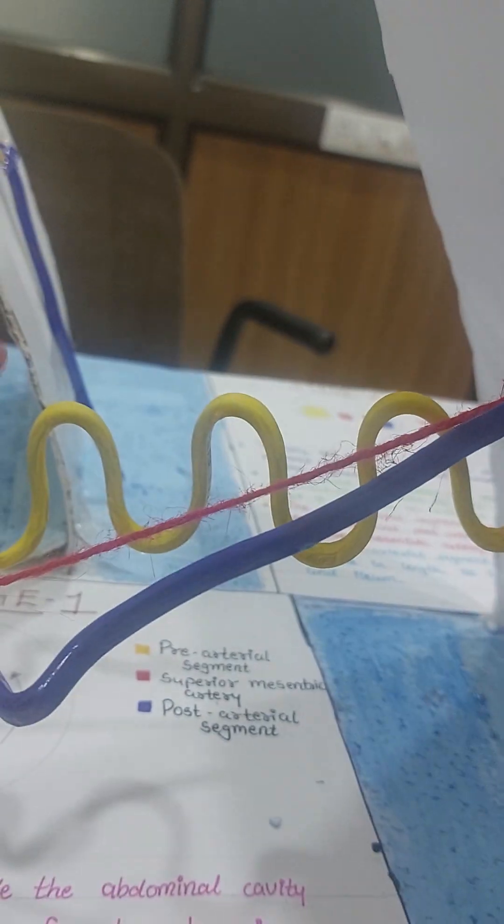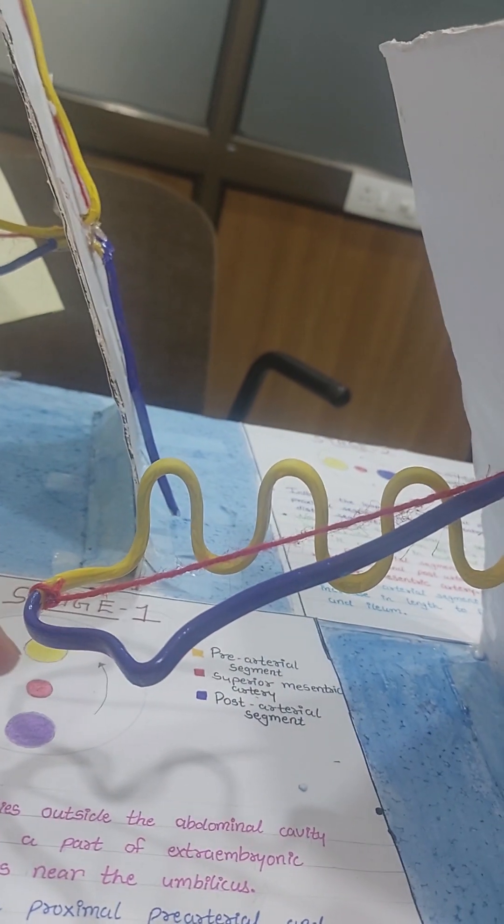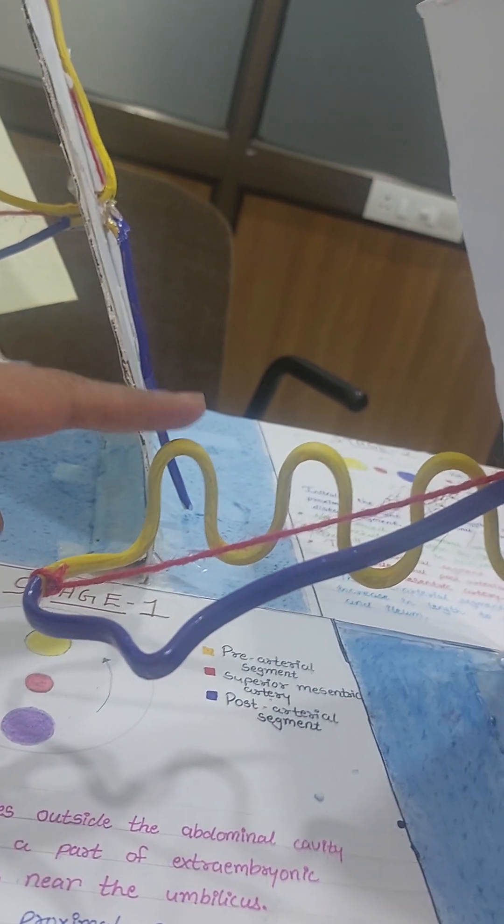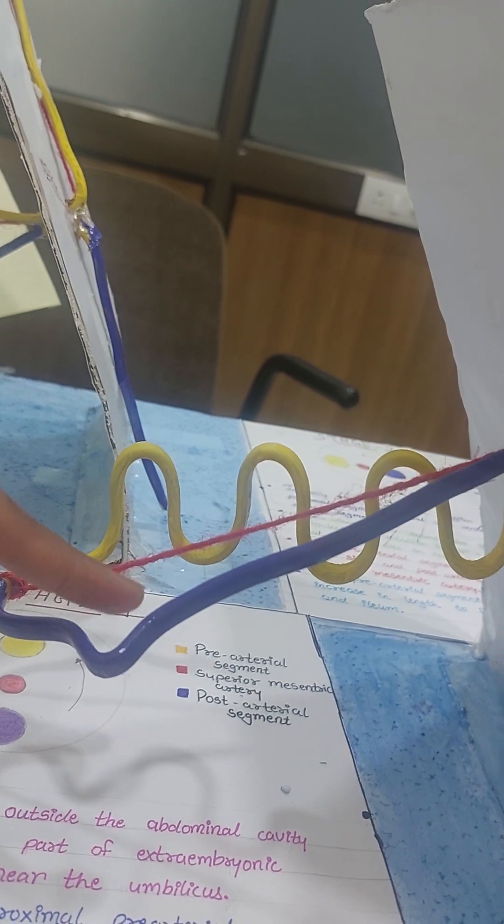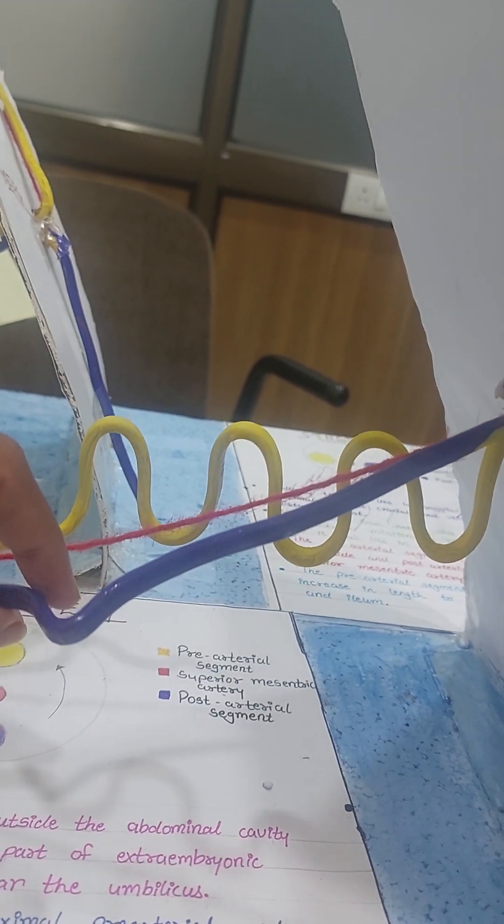What happens in the third stage? The loops, they convolute and they enlarge and grow. Again, this is our pre-arterial loop, this is our superior mesenteric artery, and this is the post-arterial loop.